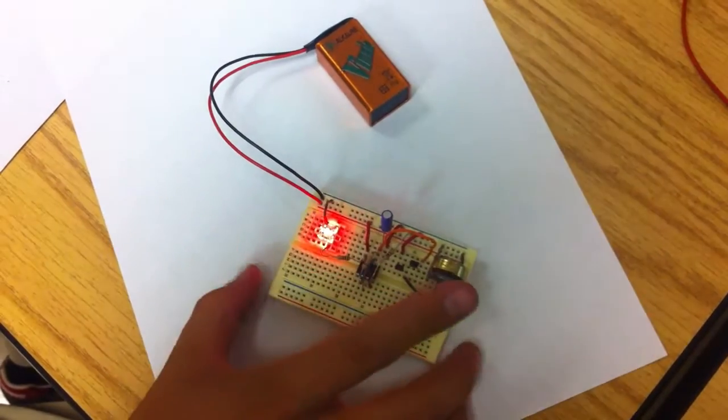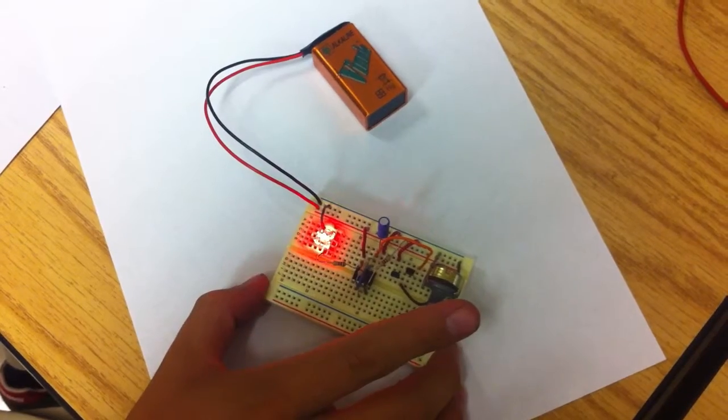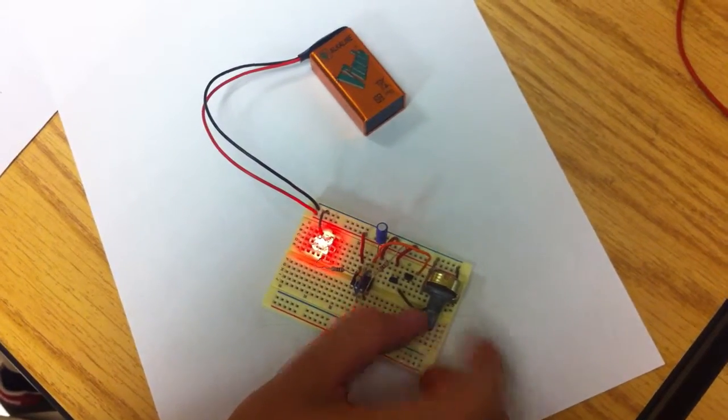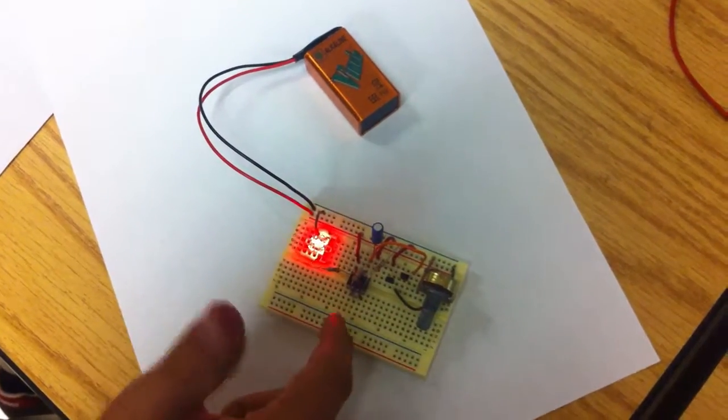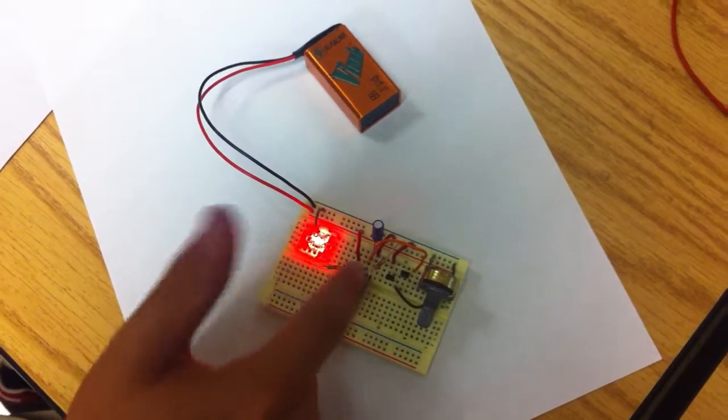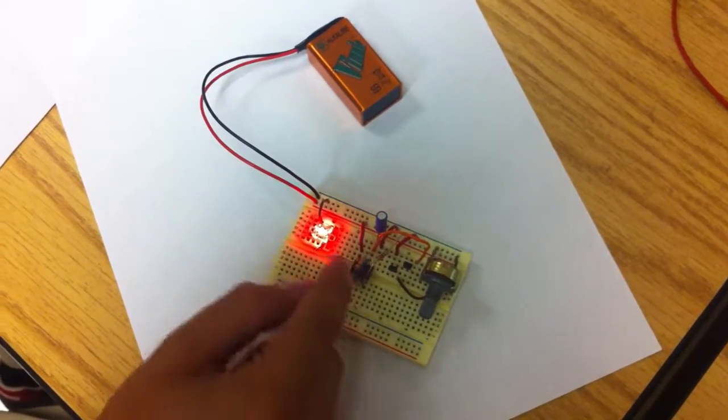Hello guys, this is my varactor controlled LED flasher. I'm using a 555 timer and it's a very simple circuit.